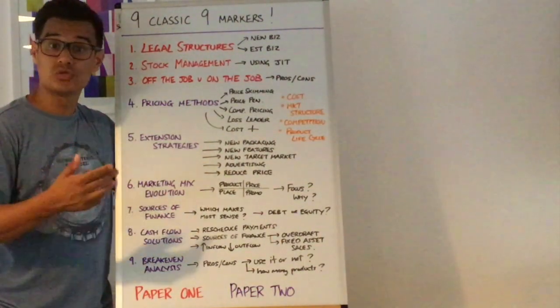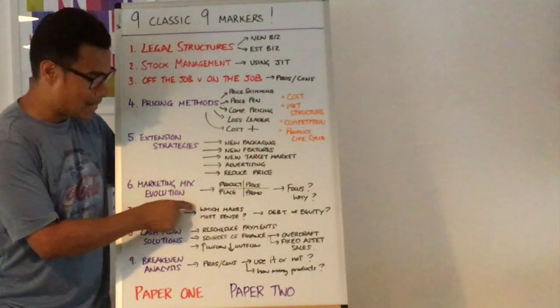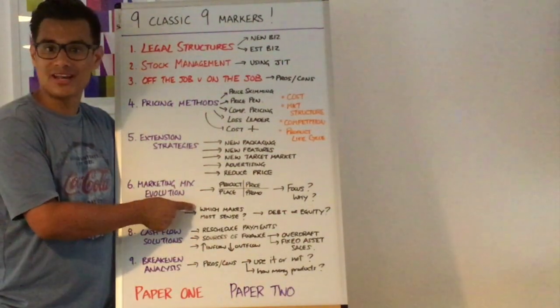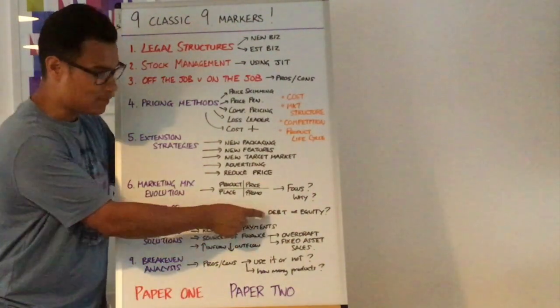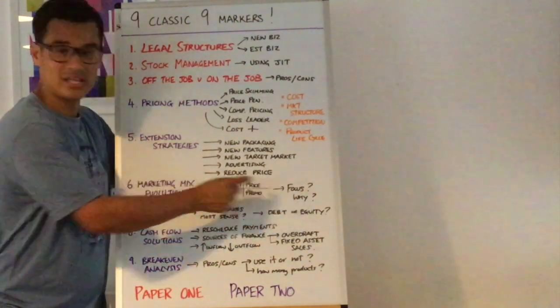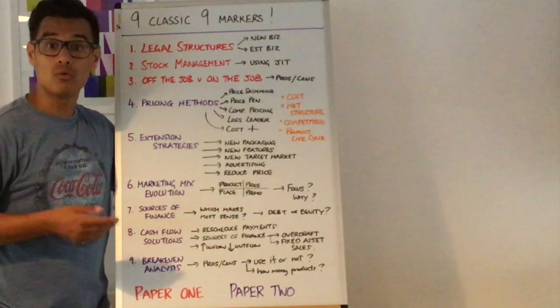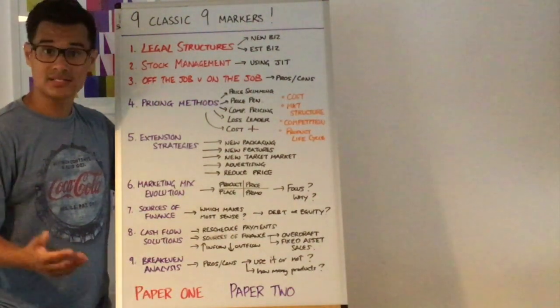Number seven, sources of finance. It could be which source of finance makes sense for the business in this situation, should they potentially go the debt route or should they get the equity route if they are for example a public limited company which makes sense to them.